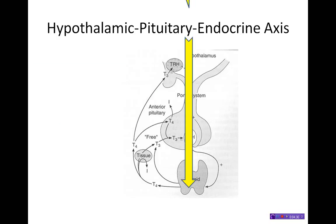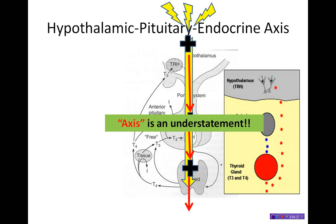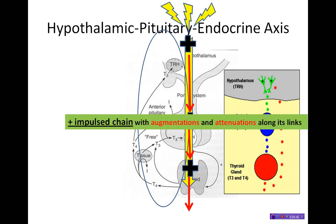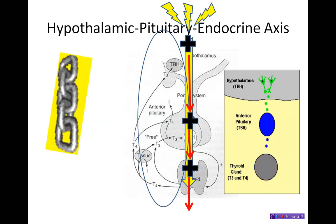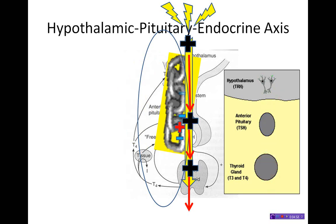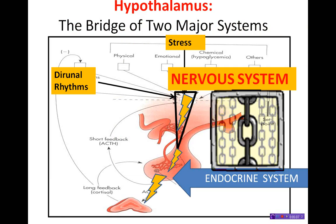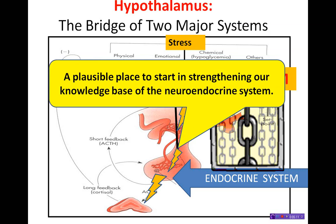The hypothalamic pituitary axis is really more than a simple axis — in fact, 'axis' is an understatement or a misnomer. If you look at all these loops, the axis is more like a positively impulsed chain with augmentations and attenuations along its length. Since the chain is only as strong as its weakest link, and since the endocrine system and nervous system are literally linked at the hypothalamic pituitary region — the first link in the chain of events along the axis — this is a plausible place to start in strengthening our knowledge base of the neuroendocrine system.